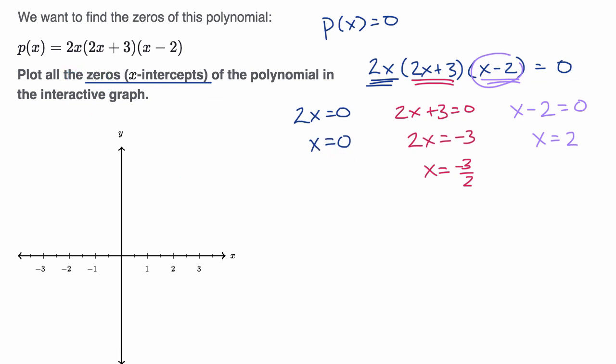So let's see, we have x equals zero, which is right over there. Once again, if you were doing this on Khan Academy, you would just click right over there and it would put a little dot there. We have x is equal to negative three halves, which is the same thing as negative one and a half. So that's right over there.